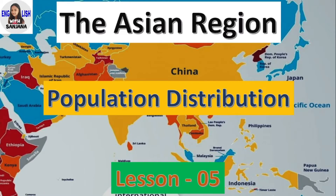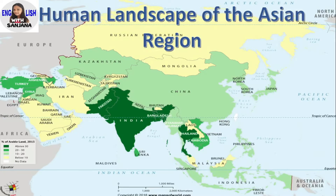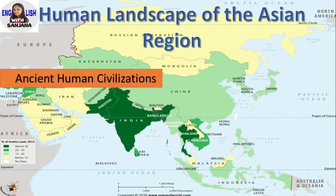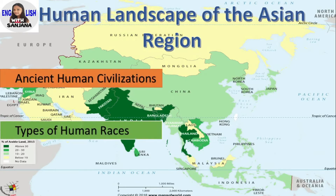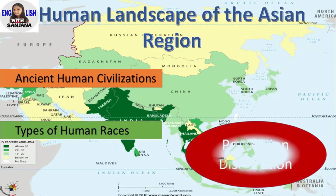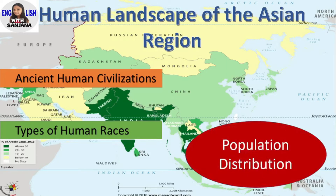If you are ready, let's begin. The Asian Region — Population Distribution, Unit 1, Lesson 5. In my previous videos on the Asian region, we already discussed much information on the geographical location of Asia, the physical landscape of Asia, and the human landscape of Asia. Under human landscape, we already learned about ancient human civilizations and types of human races in Asia. In this video, we will have a sharp and quick focus on population distribution in Asia.